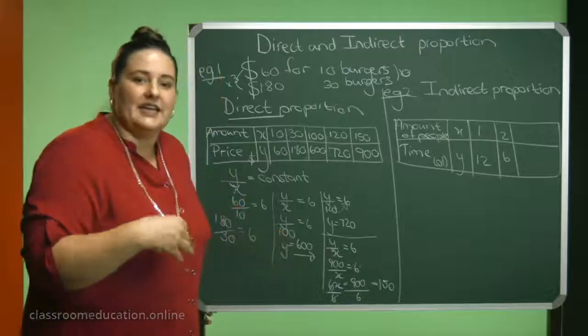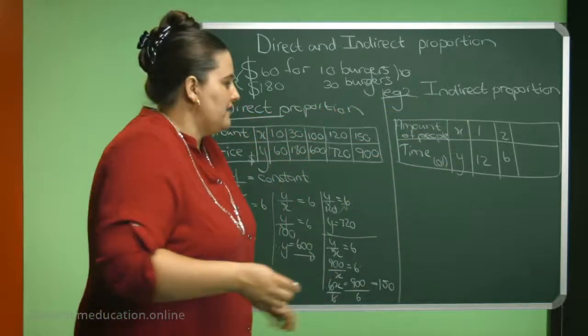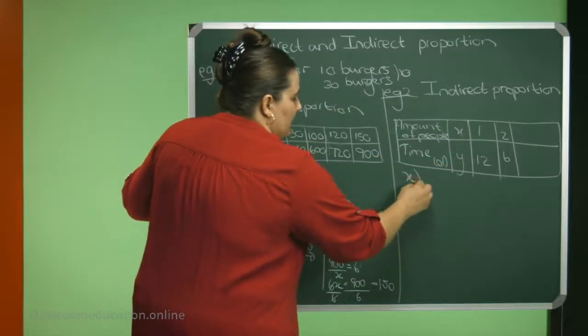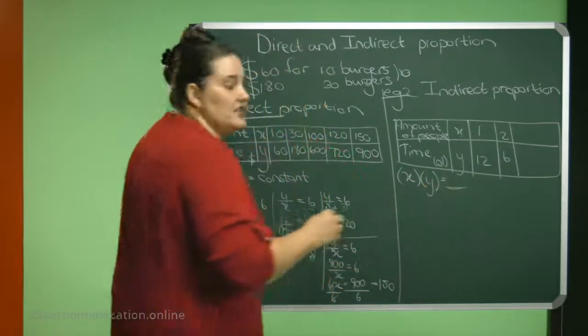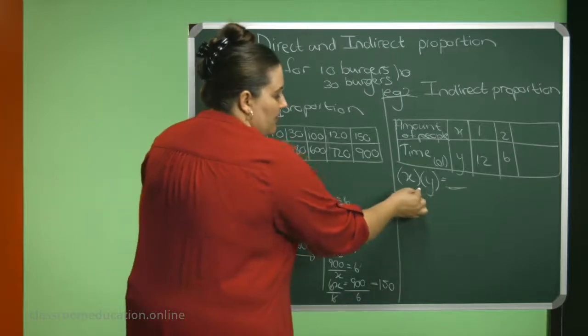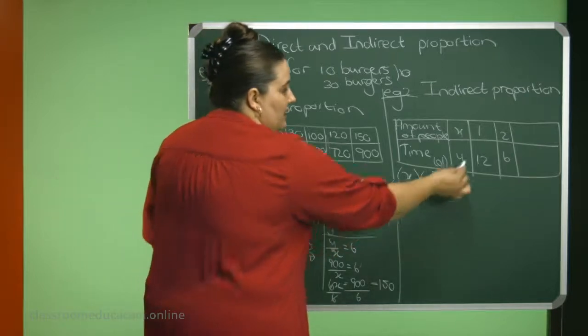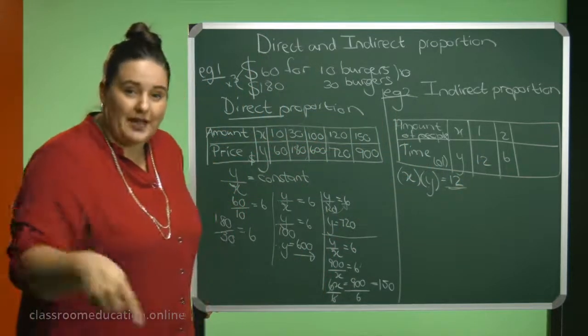Let's see how we can calculate this. Because we are talking about indirect proportion, it means that my X value times the Y value should give me a constant value in each example. So if I multiply these two values with one another, so 1 times 12, in this example, I need to get an answer of 12.